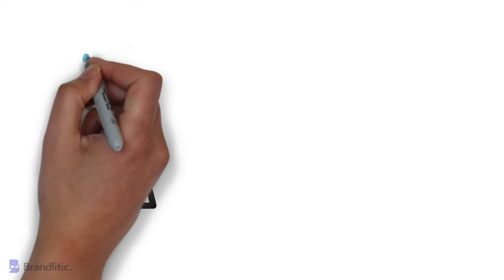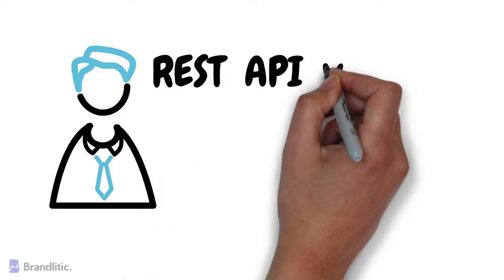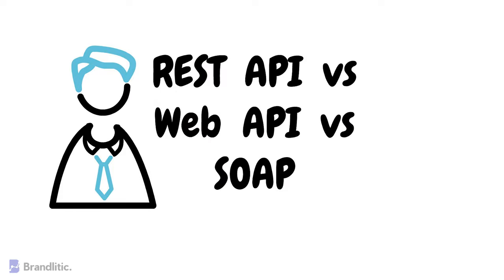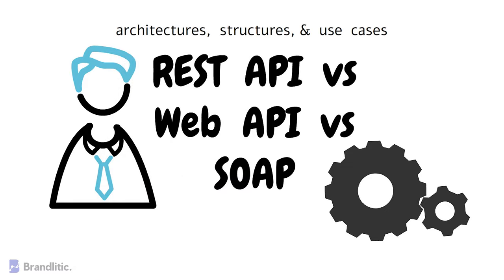As a professional software developer, it is essential to understand the difference between REST API vs Web API vs SOAP. While all are formats that are interchangeable in many situations and are used to communicate between different software systems, they have different architectures, structures, and use cases. In this video, let's explore and understand the key differences between each one of them and when to use each one.